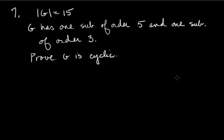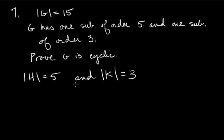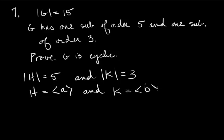Problem seven: a group of order 15 has one subgroup of order 5 and one subgroup of order 3. Prove G is cyclic. Let H have order 5 and K have order 3. Since both orders are prime, H is cyclic and generated by some element A, and K is cyclic and generated by some element B. We then consider AB as a likely candidate for generating the whole group.